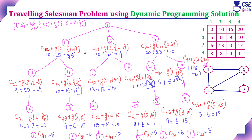Among these three values — 35, 40, and 43 — the minimum cost is 35. The optimal path is: 1 to 2, then 2 to 4, then 4 to 3, then 3 to 1. This is the optimal tour with a total minimum cost of 35. The salesman will choose this path to maximize his profit.